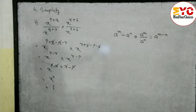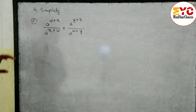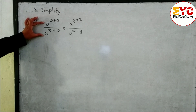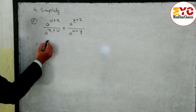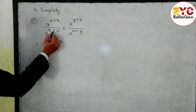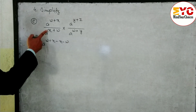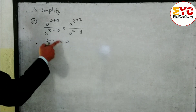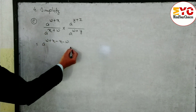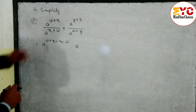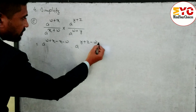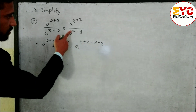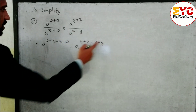Hope you understand question number (b). Now look at question (c) — same process. Base same, in divide subtract the power. We write a power (w+x), then minus x and minus w. Again base same and in divide subtract the power: we write (y+z), minus w, minus y — since plus w becomes minus w, plus y becomes minus y.